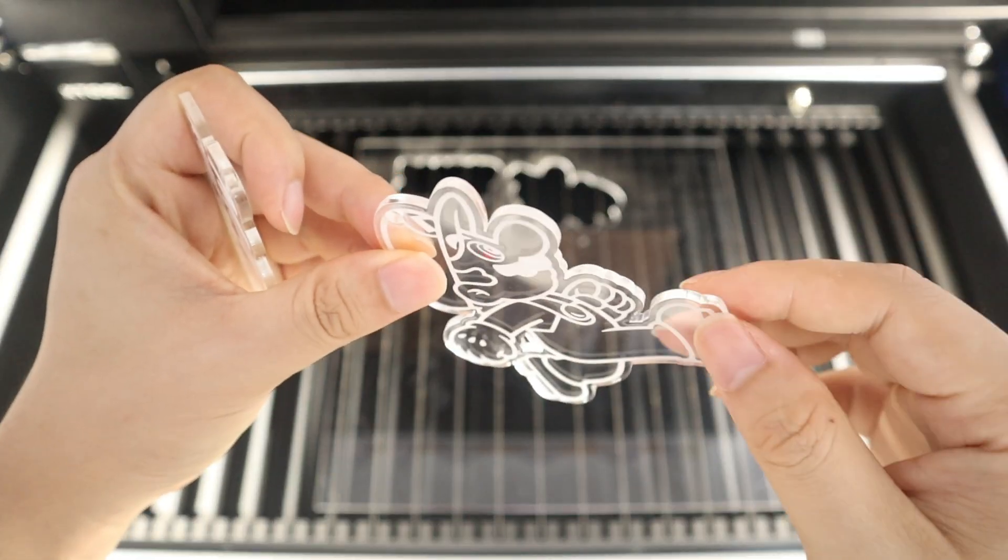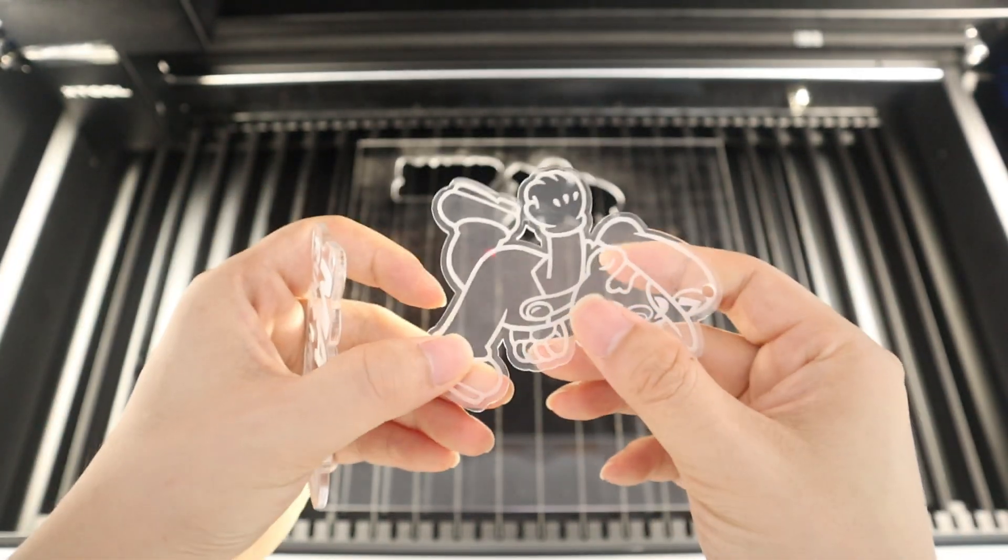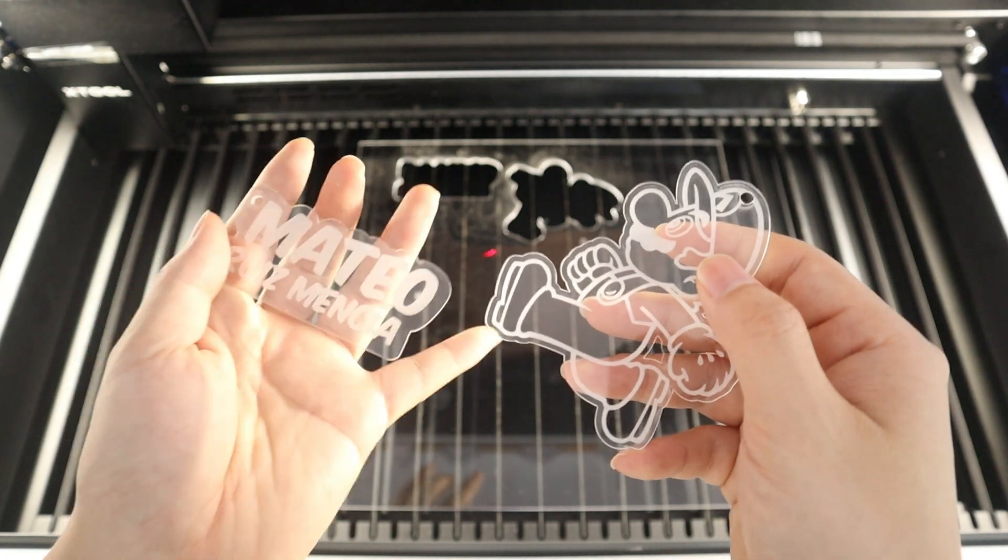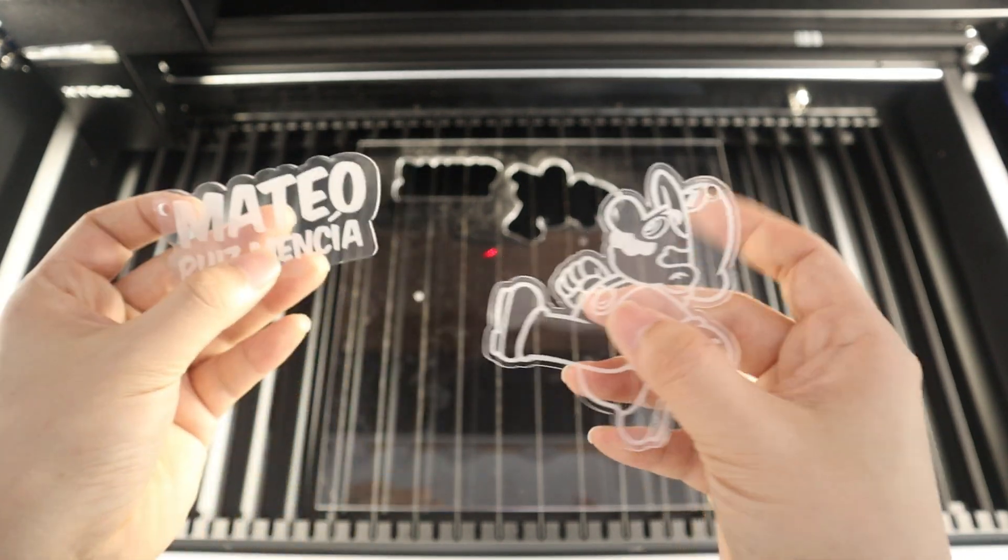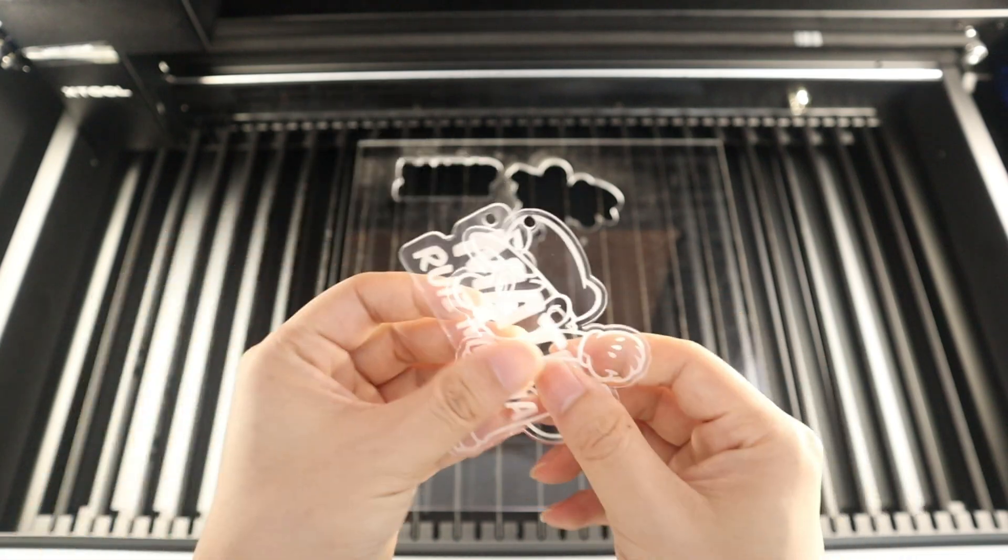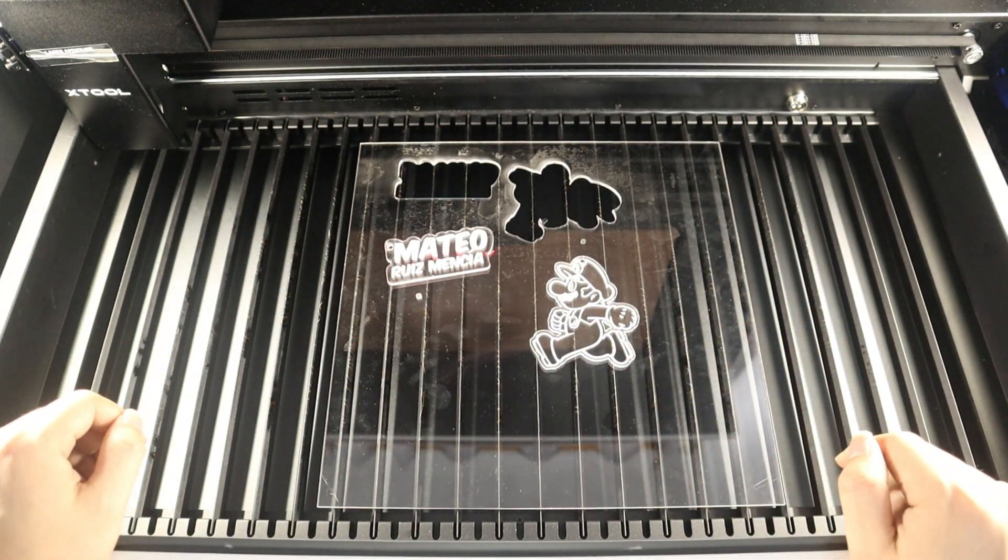The engraving parameters are 50% laser power, 500 mm per second engraving speed, and 200 lines per centimeter engraving density. The cutting parameters are 100% laser power, and 20 mm per second cutting speed, only cut one pass.